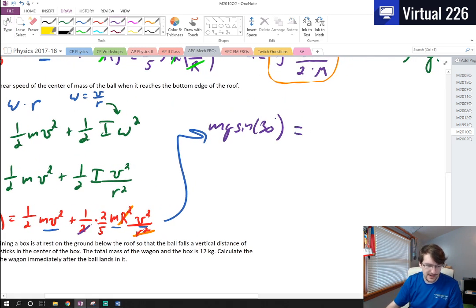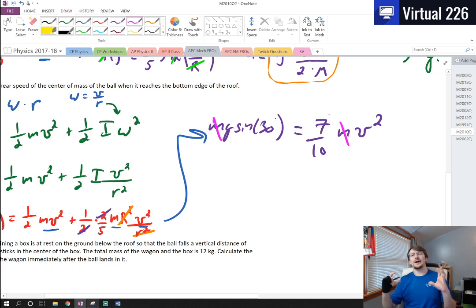If we do a little bit of algebra, we get MGH, and I'll substitute the H in now as 4 sine 30, equals 1 half MV squared plus 1 half times our moment of inertia, that is 2 fifths MR squared, times V squared over R squared. These R's are actually the same because it's the radius of the ball. Notice I have something MV squared here and something MV squared here. This is very nice because those are like terms and I can add them together. We're going to have Mg times 4 sine of 30 equals, the half and the half are going to give me 1 half plus 1 fifth, that's 0.7, so 7 tenths MV squared.